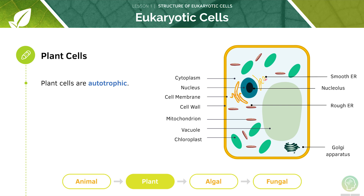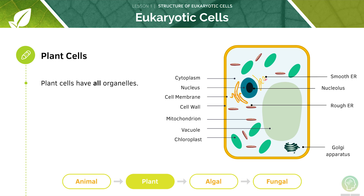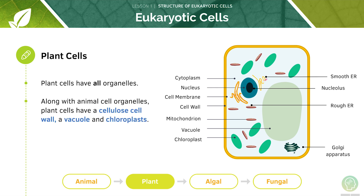Plant cells are said to be autotrophic. Most plant cells are multicellular eukaryotes which carry out photosynthesis and make their own food. Plant cells have all the organelles — in addition to animal cell organelles, plant cells have a cellulose cell wall, a vacuole and chloroplasts.